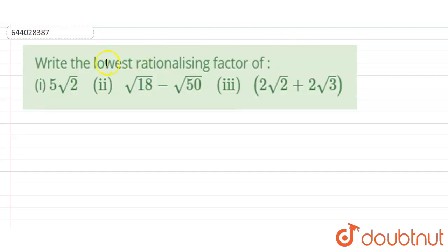Hello students, in this problem, we are required to write down the lowest rationalizing factor of: number one, 5 root 2; second one, root 18 minus root 50; third one, 2 root 2 plus 2 root 3.